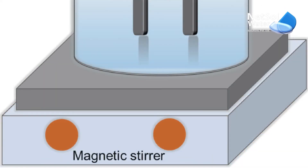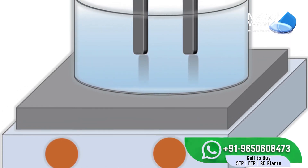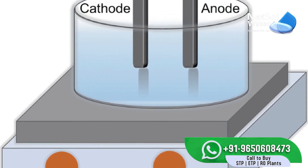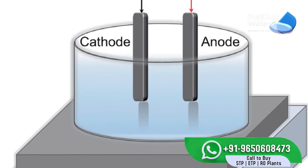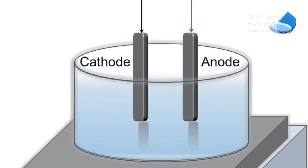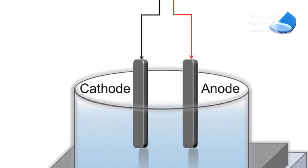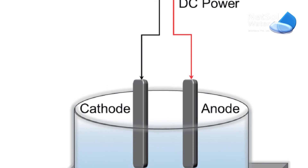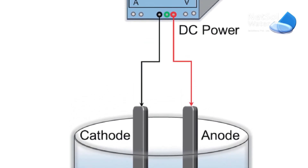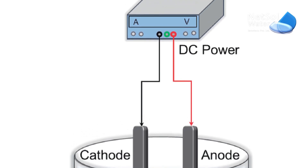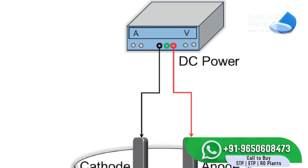The final stage is the formation of flocs through aggregation of destabilized phases and particulates. In this stage, the active surfaces for the adsorption of contaminating species are provided by oxides, hydroxides, and oxyhydroxides. The flocs generated by coagulation entrap and connect colloidal particles that remain in the aqueous medium. At the anode, electrolyzed water creates small bubbles of oxygen, and at the cathode, small bubbles of hydrogen. The bubbles attract flocculated particles, causing them to float to the surface.